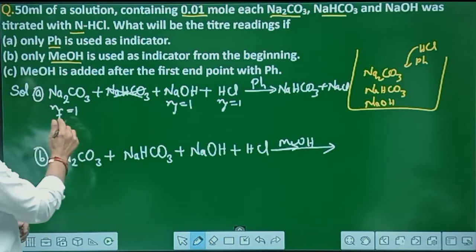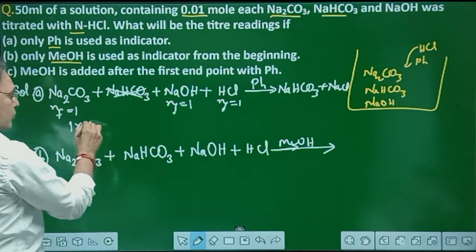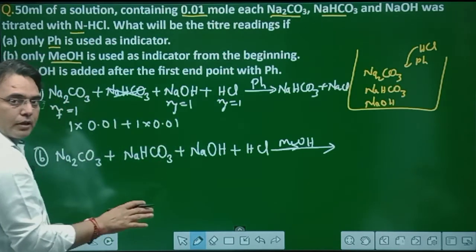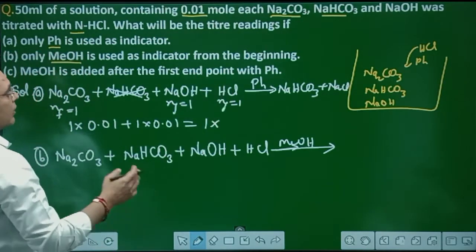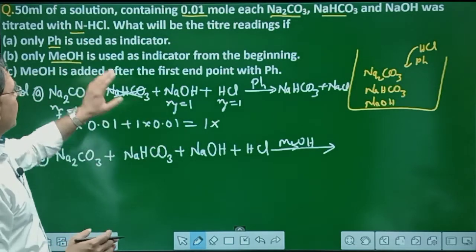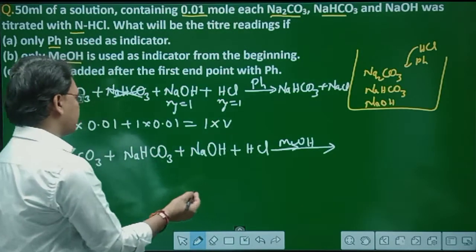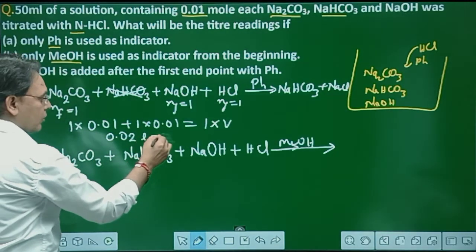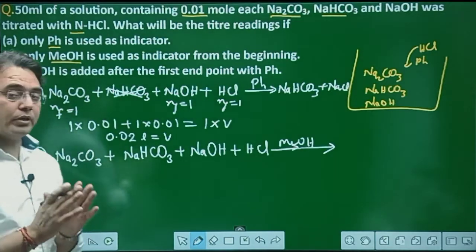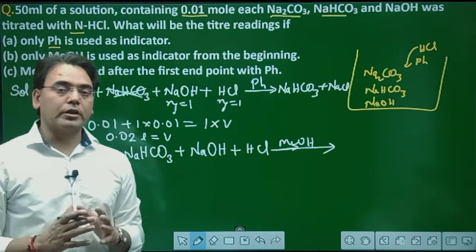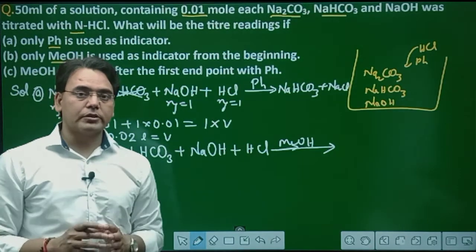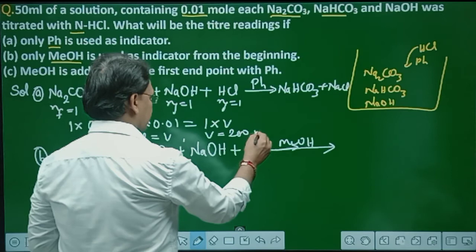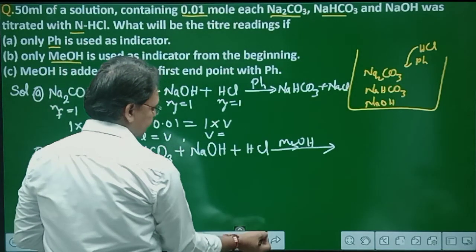N-factor into moles: N-factor for Na₂CO₃ is 1, moles are 0.01; plus 1 × 0.01 moles of NaOH equals 1 × normality of HCl × volume. Normality of HCl is 1, so: 0.01 + 0.01 = 0.02 liters. Therefore, volume of HCl = 20 mL.